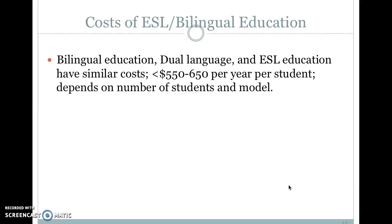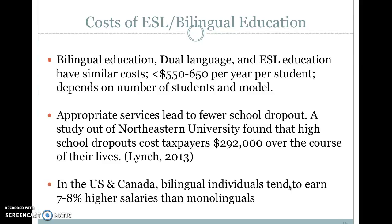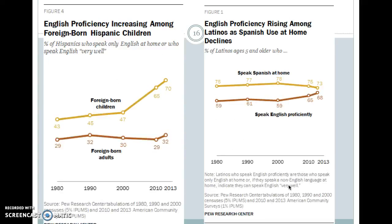A quick rundown on the cost of bilingual education: our Samway and McKeown book points out that bilingual education, dual language, and ESL education — programs we'll discuss later in the course — cost about $550 to $650 per year per student, adjusted for today's dollars, depending on the number of students in the model. Appropriate services do lead to fewer school dropouts. A study out of Northeastern University found that high school dropouts cost taxpayers $292,000 over the course of their lives. So there's a cost to services, but also a cost to not providing services. Bilingual individuals in the U.S. and Canada tend to earn seven to eight percent higher salaries than monolinguals.